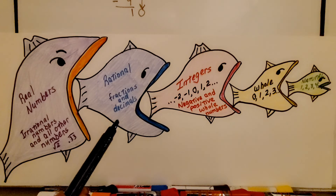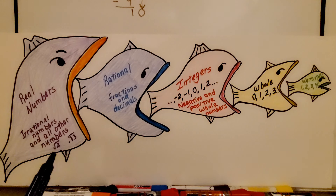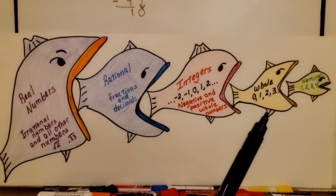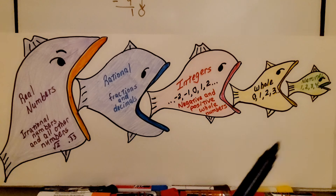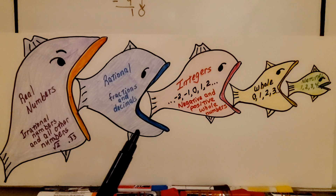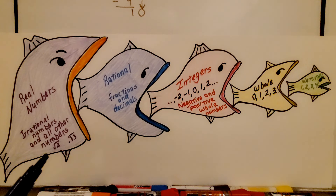Then we have rational numbers — those are fractions and decimals. And we have real numbers, which are irrational numbers and all the other numbers that can't be written as a fraction or a decimal that terminates at a certain place value. The whole numbers include natural numbers. Integers include whole numbers and natural numbers. Rational numbers include integers, whole numbers, and natural numbers. And real numbers include all of them and the irrational numbers.